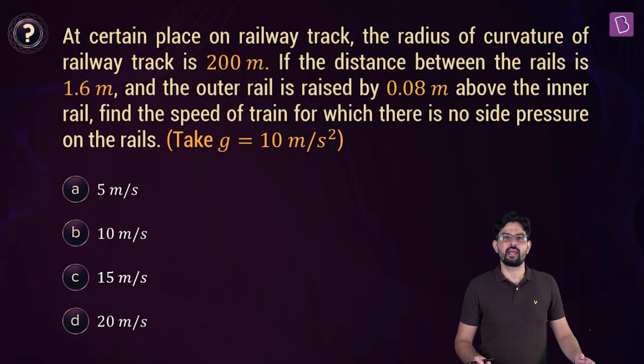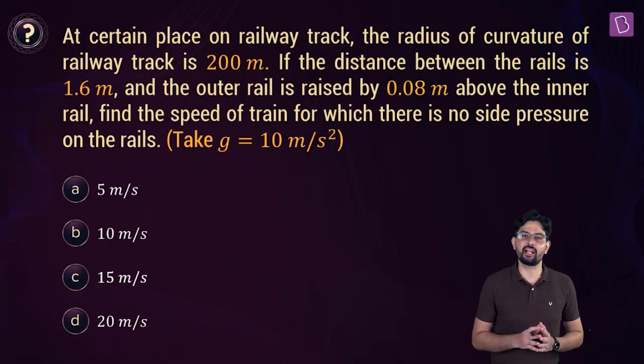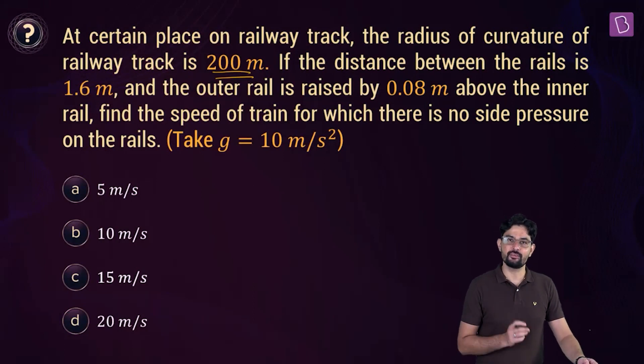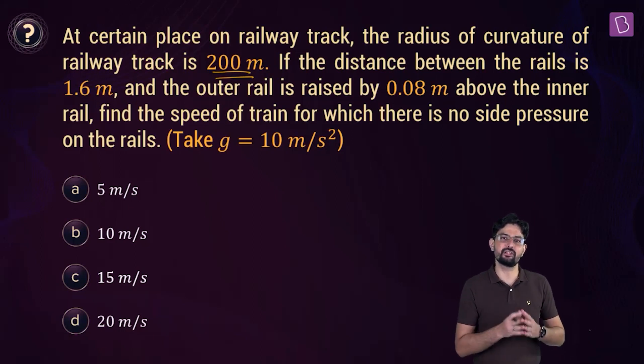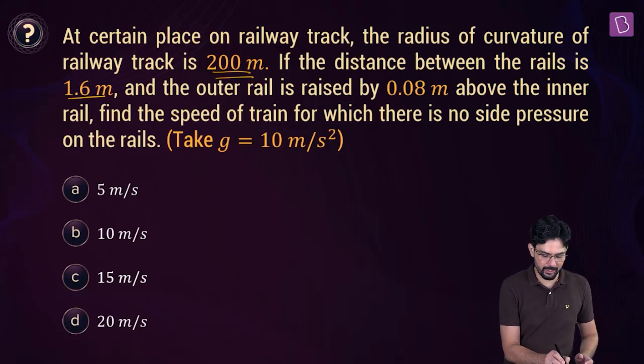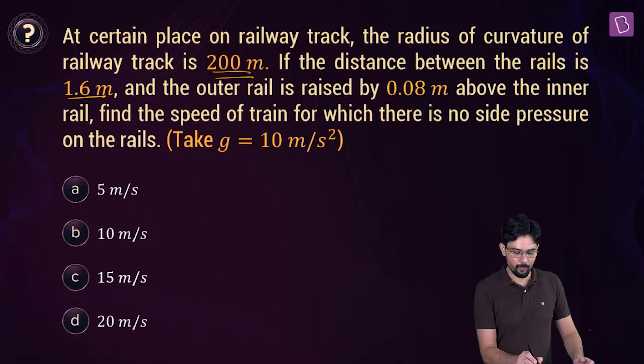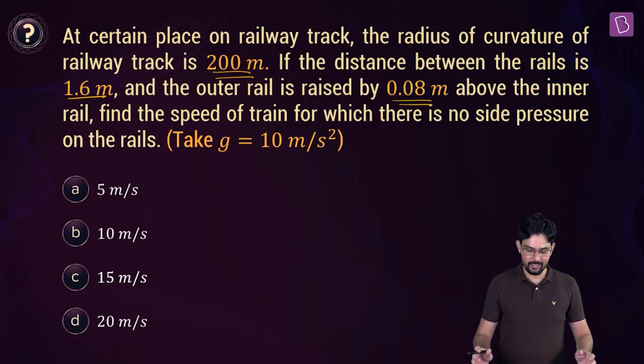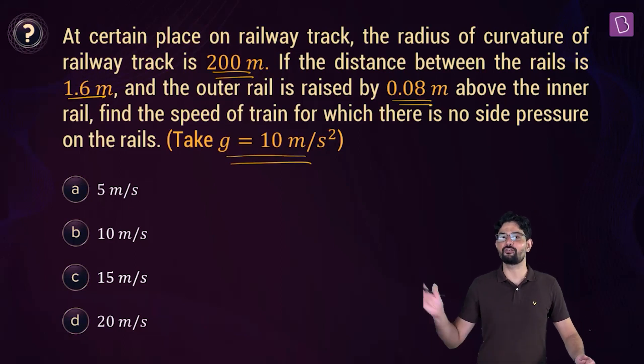According to this problem, at a certain place on railway track, the radius of curvature of the railway track has been given to you as 200m. Given that at that place, the distance between the rails is 1.6m and the outer rail is raised by 0.08m above the inner rail. You have to find out the speed of the train, such that there is no side pressure on the rails. Assuming the value of g is 10m per second square, you have to choose the right option out of these given options.